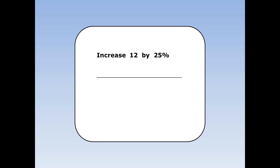Increase 12 by 25%. First of all I'm going to find the increase of 25% and then I'm going to add it on to the original of 12. 25% is the same as a quarter. To find a quarter I divide by 4. 12 divided by 4 is 3. So this is the increase. And then I add this on to the original which is 12. 12 plus 3 is 15.